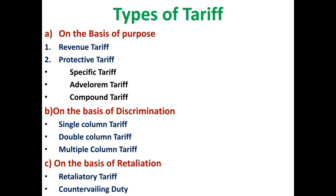We have three different types of protective tariff. If tariff is imposed on the basis of the physical measurement of the commodity, we call it a specific tariff — like litre, ton, etc. If tariff is imposed as per the value of the commodity being traded, we have ad valorem tariff. Compound tariff is the combination of specific as well as ad valorem.